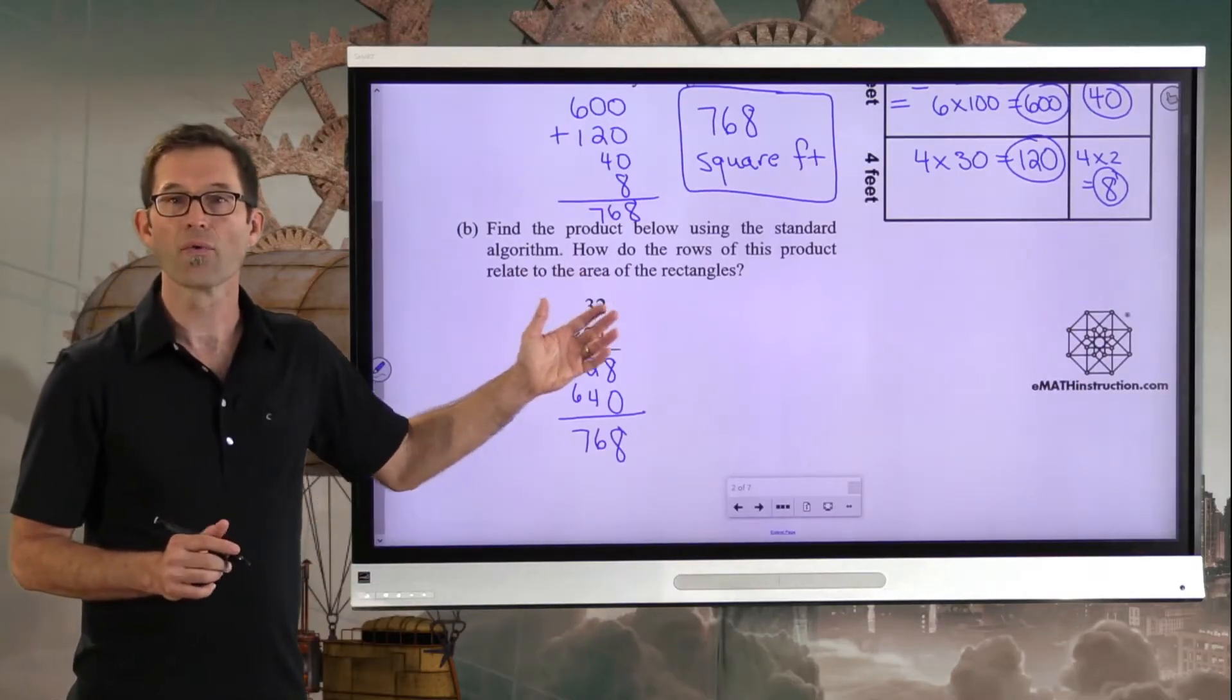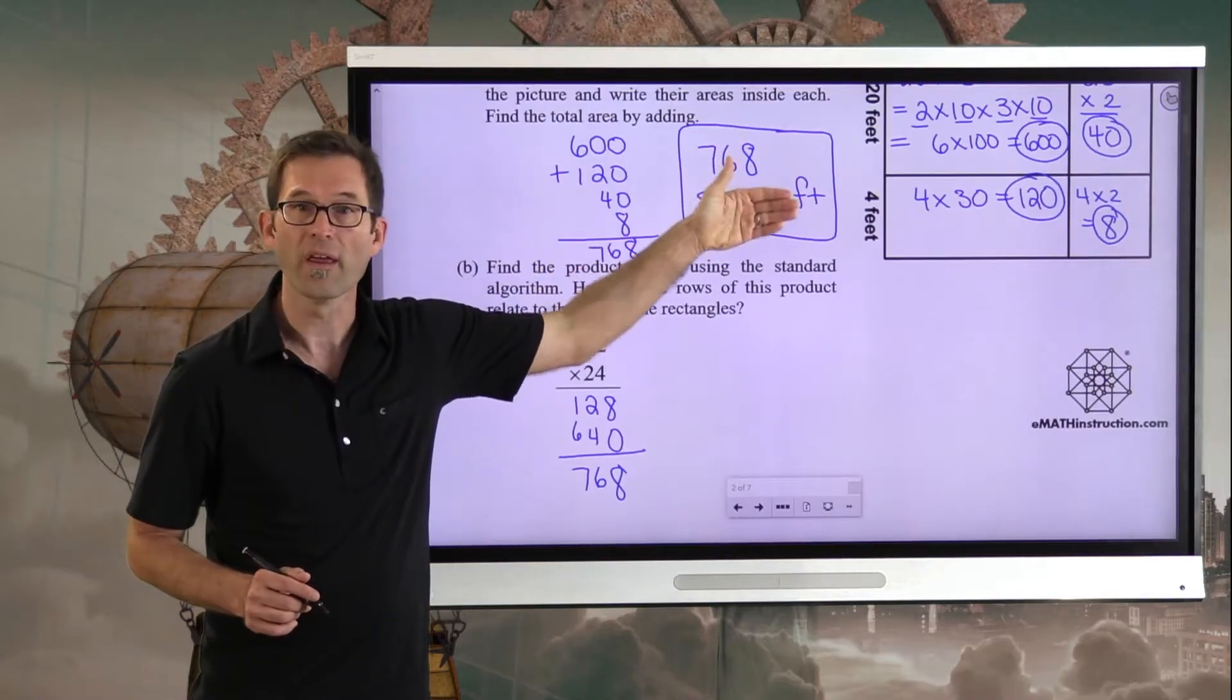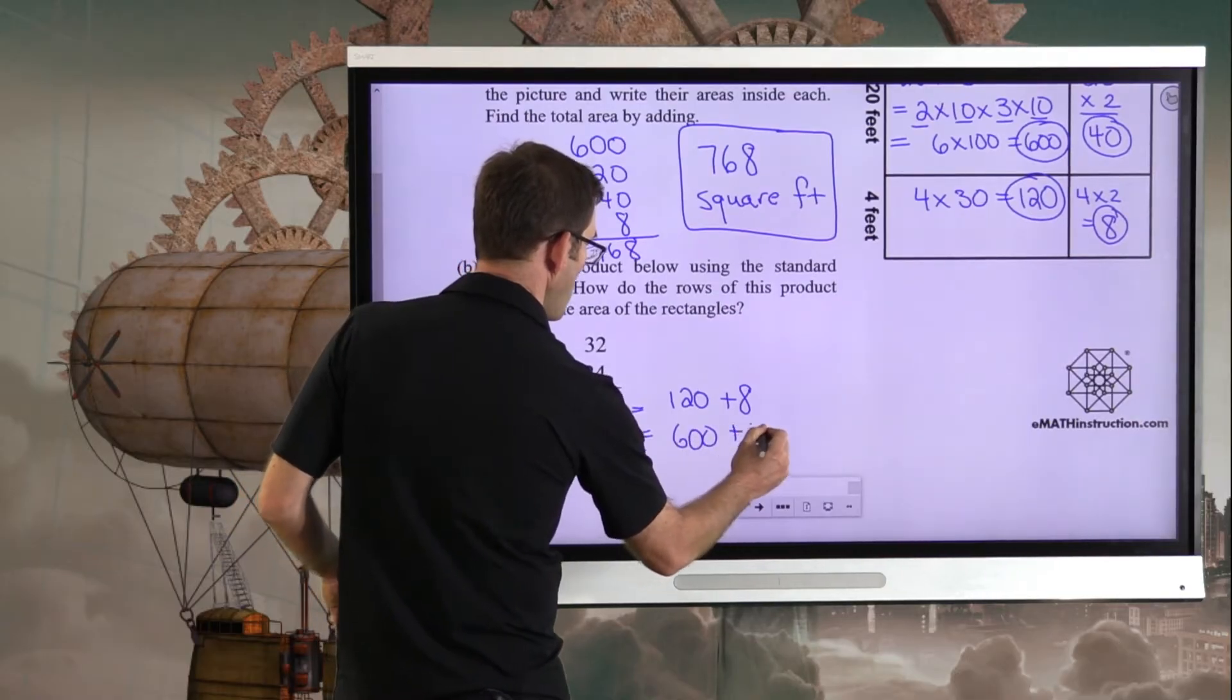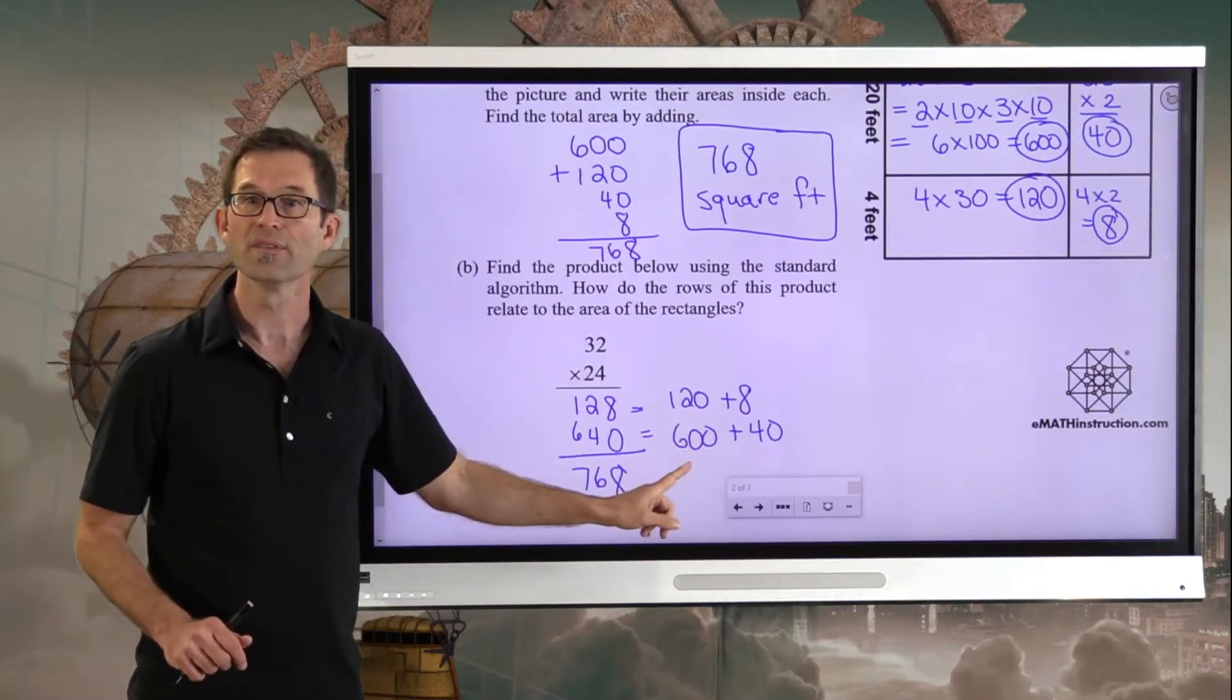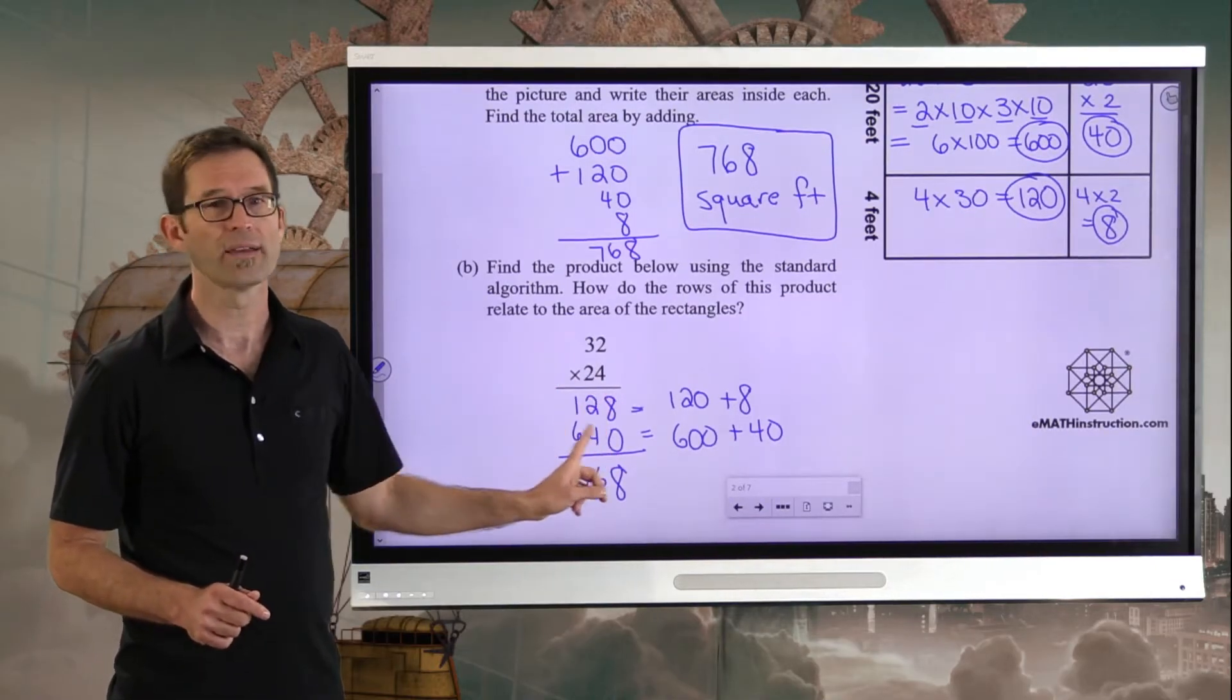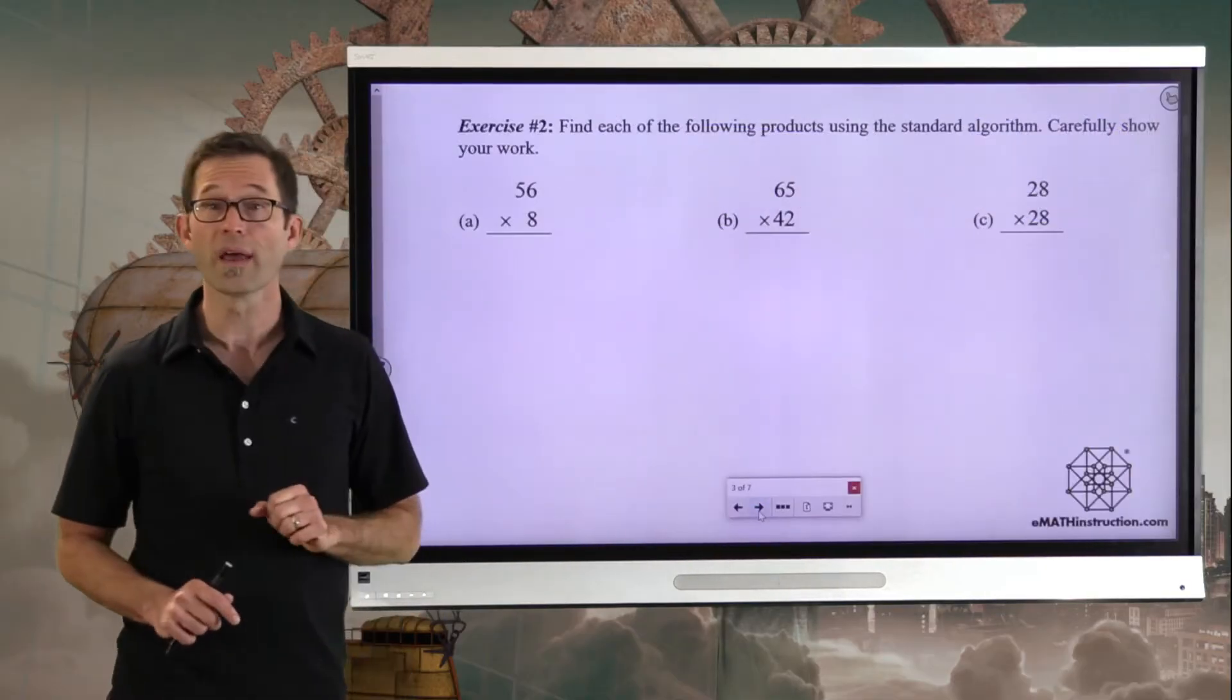The problem also asks how do the rows of this product relate to the areas of the rectangle? Well, there we had 600, 120, 40, and 8. Look at this 128, that's really 120 plus 8, and that 640 is 600 plus 40. You can see all four of those separate areas right here. The real key is that you're really multiplying 32 by two numbers, 20 and 4. When you multiply by the 4, you just get 128. But when you multiply by the 20, you have to add that 0 first in order to get the right number.